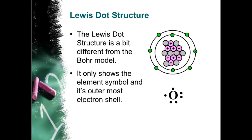Lewis dot structure. The Lewis dot structure is a bit different from the Bohr model. It only shows the element symbol and its outermost electron shell.